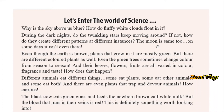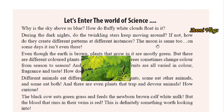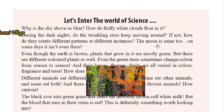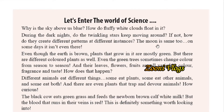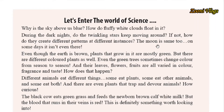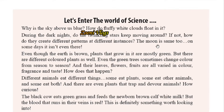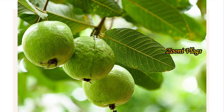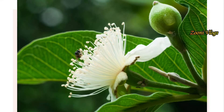When you observe plants, you can see mostly they are green colored. But there are different colored plants as well — not only green, but also red, pink, and many other colors. Even green trees sometimes change color from season to season. The color of leaves can also change season to season. Leaves, flowers, and fruits are all varied in color, fragrance, and taste. For example, if you have a mango tree or a guava tree at your home garden, the flowers, leaves, smell, and fruits are all different from one another.